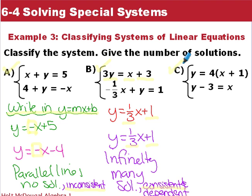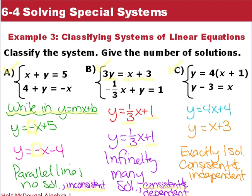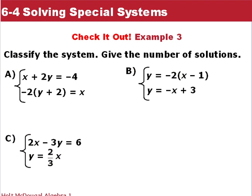Now let's look at our last example for C to classify this system. Let's put them in slope-intercept form. For C to put them in slope-intercept form, we had to distribute the 4 to every term in that parenthesis there, leaving us with y equals 4x plus 4. And the second equation, add 3 to both sides, so y equals x plus 3. Here are two equations. Different slopes, different y-intercepts, so they have exactly one solution, making the system consistent and independent. Now it's your turn to classify these systems. Put them in slope-intercept form, compare the slopes and compare the y-intercepts.